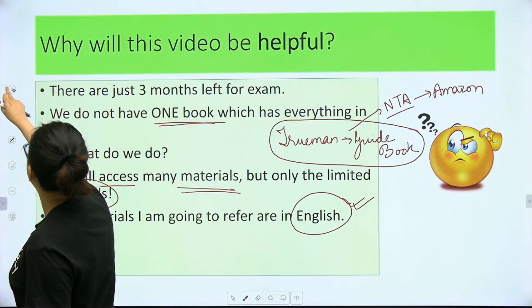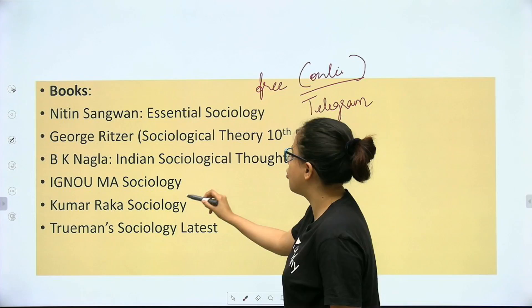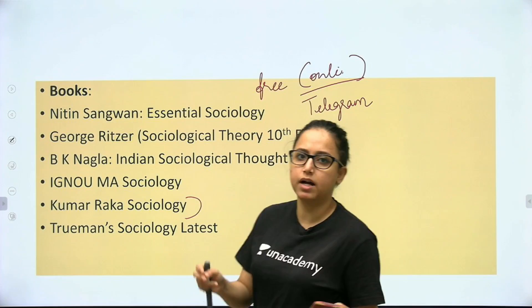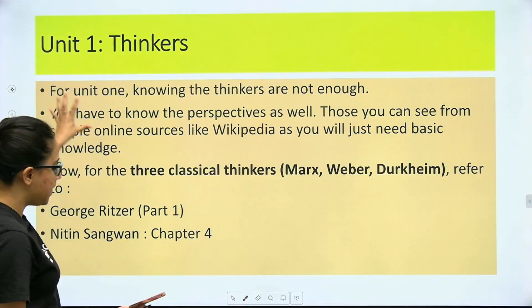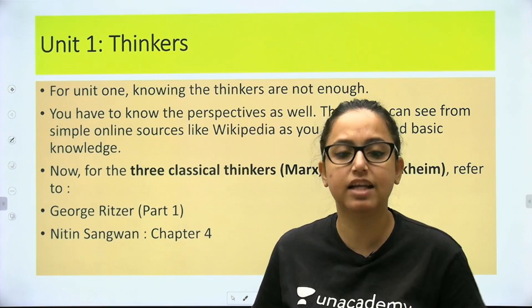The key books available online are: B.K. Nagla — Indian Sociological Thought; IGNU ke saare MA Sociology materials; Kumar Raka ka Sociology; Trueman's Sociology latest. In mein se Kumar Raka online available nahi hai, but that is not an issue because uske jo bhi important cheez hain, main already aap logo ko provide karti hun. Iske saare materials internet mein kaafi haad tak mil jaate hain. So yahan par maine saare important kitabon ke important parts ki poori list banayi hai — is video ko ache se dekhoge toh aapko ye list handy mil jayegi.